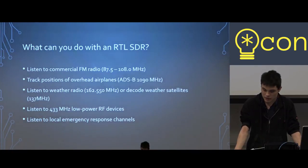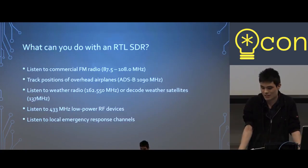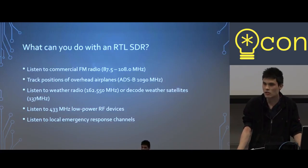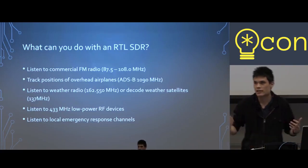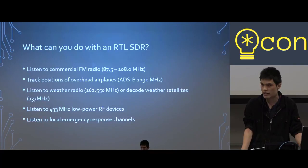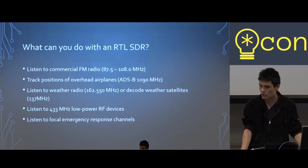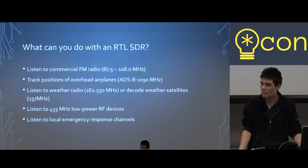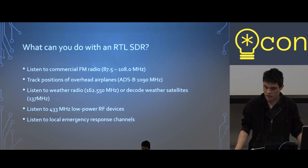So what can you do with an RTL-SDR? The first thing you can do anywhere in the world is just plug it into your computer and listen to commercial FM radio. You can also use it to track the location of overhead airplanes using a protocol called ADSB, which runs at 1090 MHz. You can also listen to your local weather alerts radio — a government service — which in Kitchener is 162.550 MHz. You can decode weather satellites, which run at 137 MHz, though you'll probably need a special antenna. You can also listen to low-power battery-powered devices running on 443 MHz, like garage door openers, and you can listen to emergency response channels.